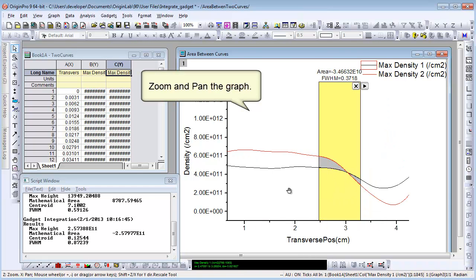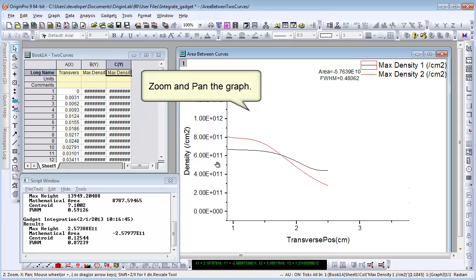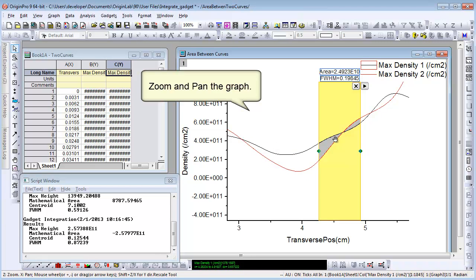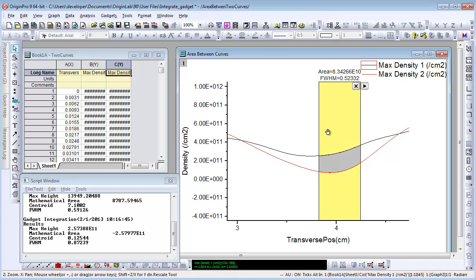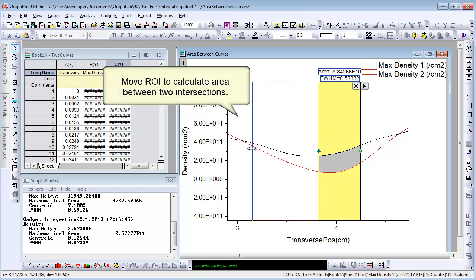To locate the intersections more precisely, you can press ZK and use mouse to zoom and pan the graph. Then you can resize the ROI box more precisely. And you will get a more precise integration result.